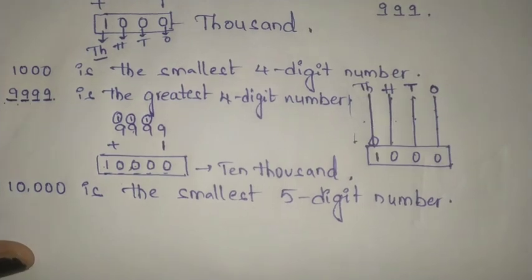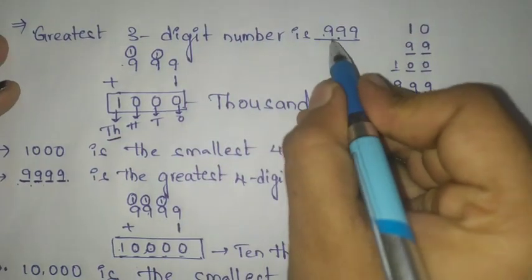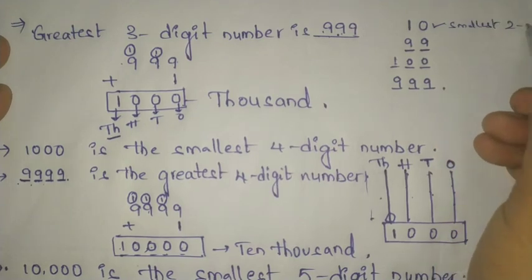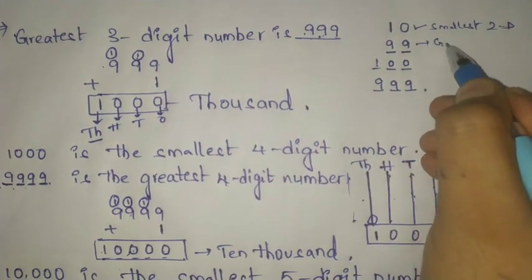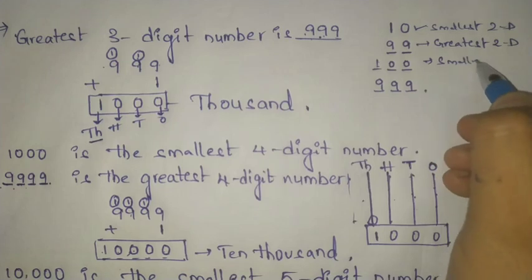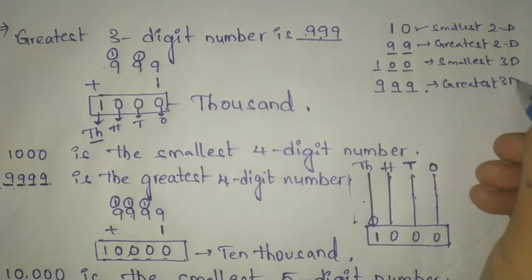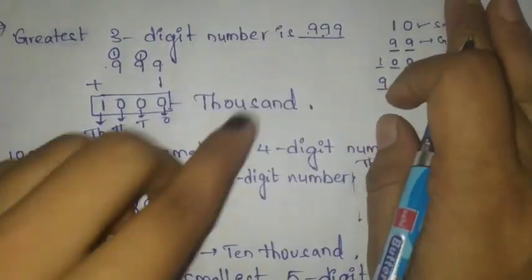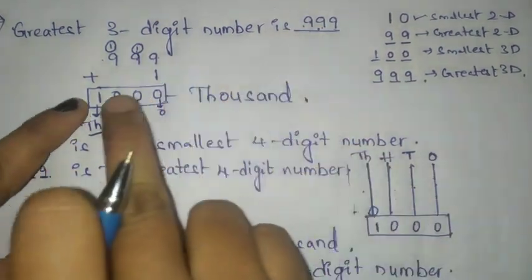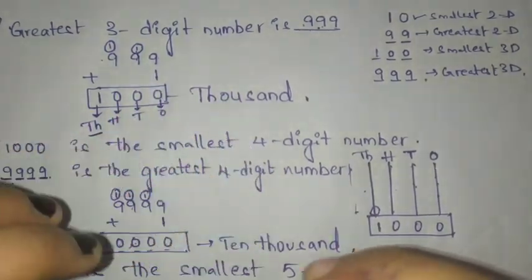Now look here children, let's recall once again. Greatest three digit number is 999. The smallest two digit number is 10, greatest two digit number is 99. Taking the greatest three digit number 999, if we add one to this number then we get thousand. Thousand is the four digit number.